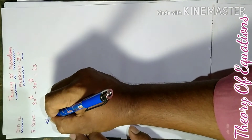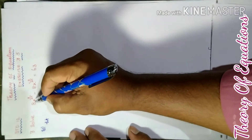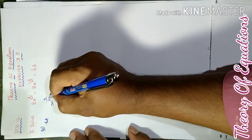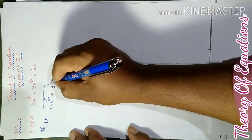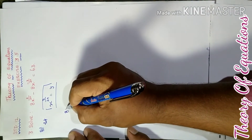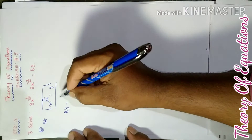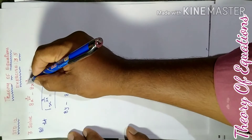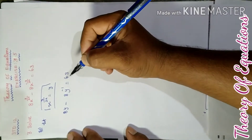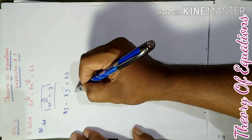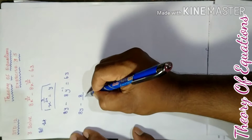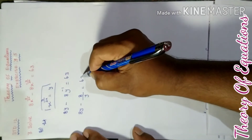Now let's do the solution. First, let the term x power 3 by 2n equal to y. Then 8y minus 8 by y equal to 63, meaning the inverse term gives us 8y minus 8/y equal to 63.